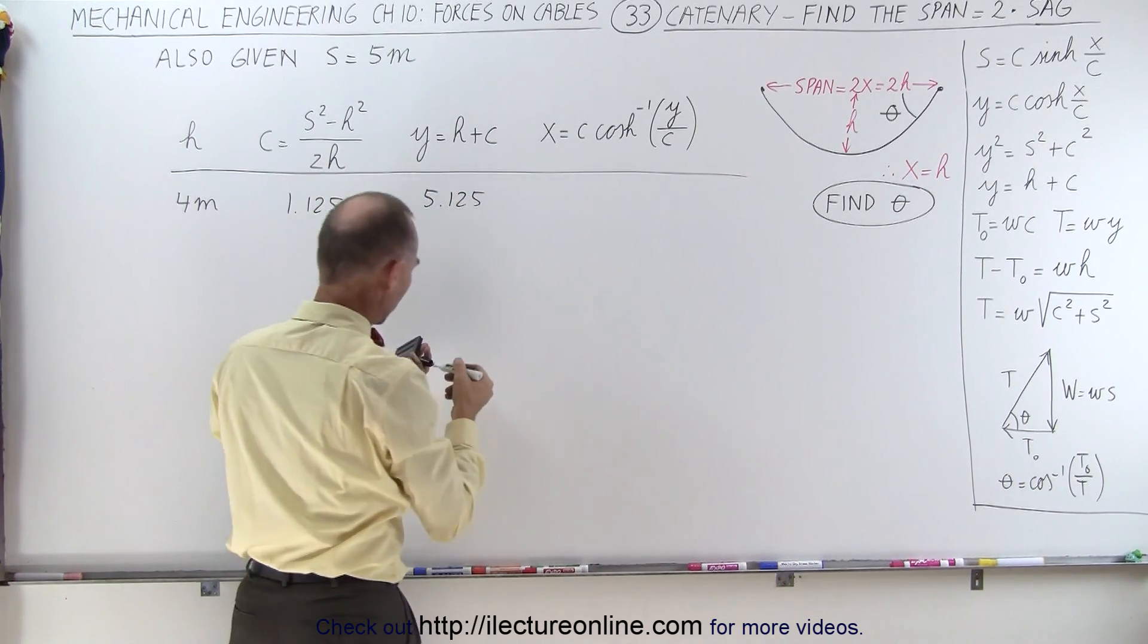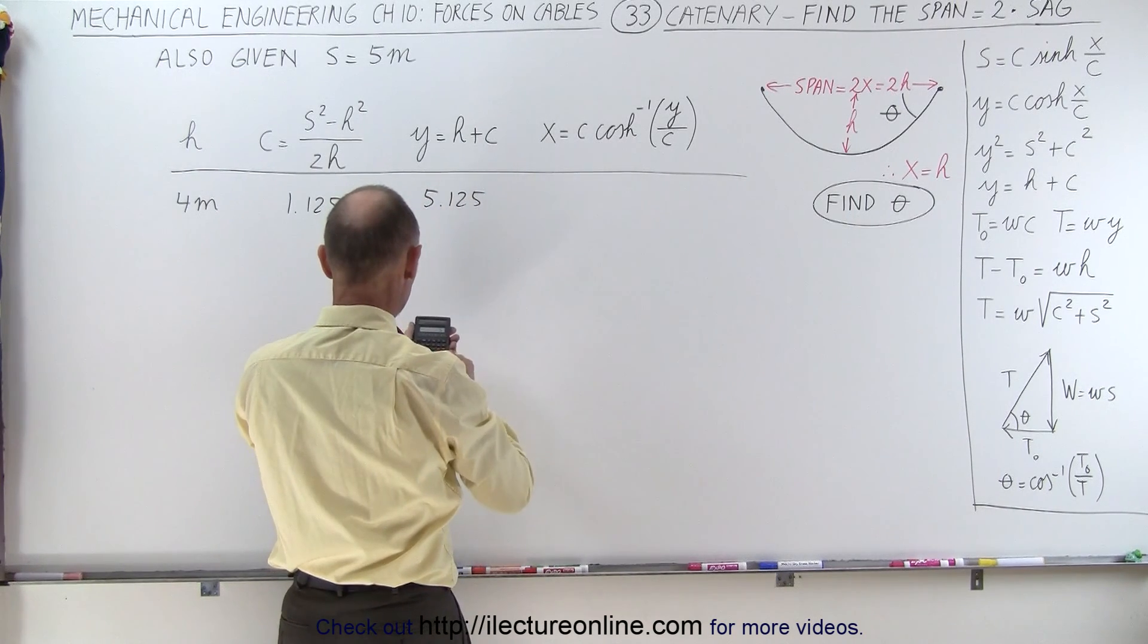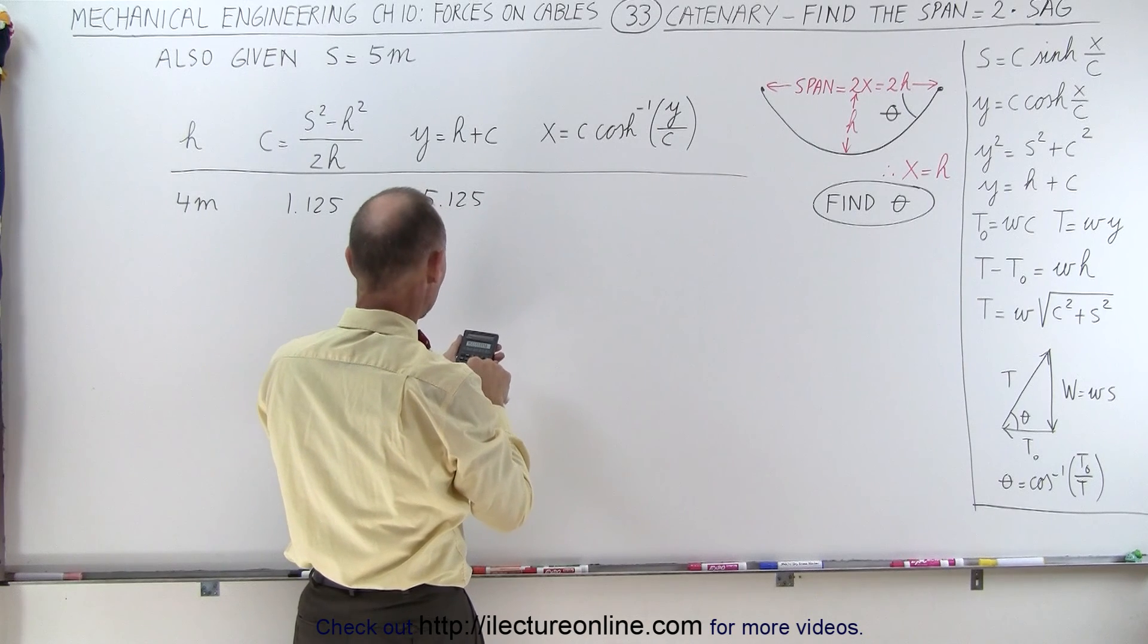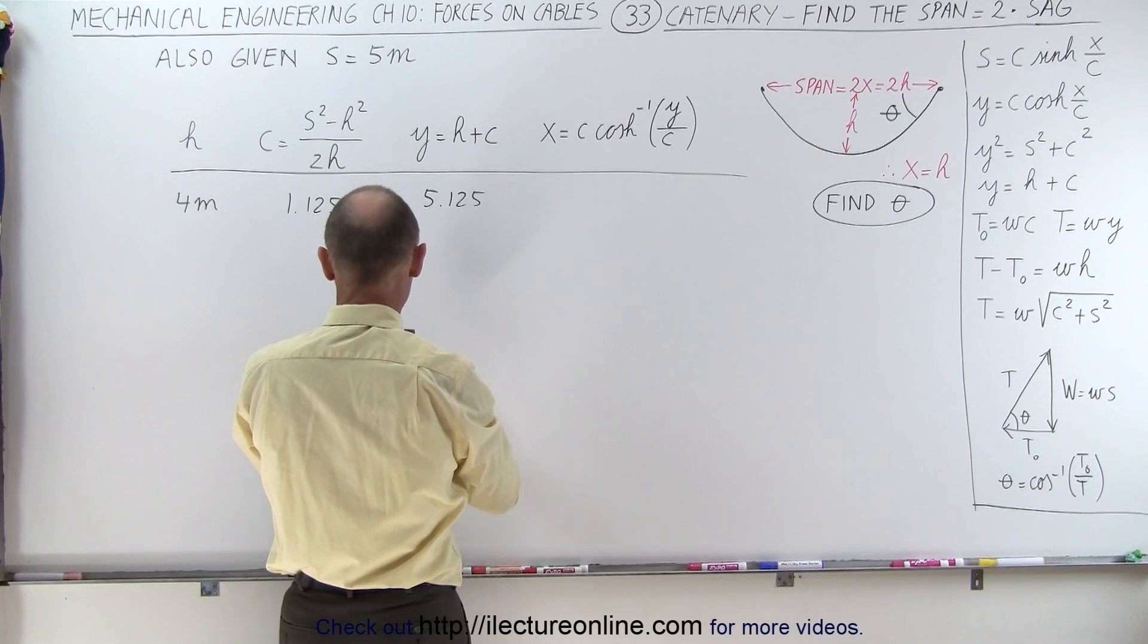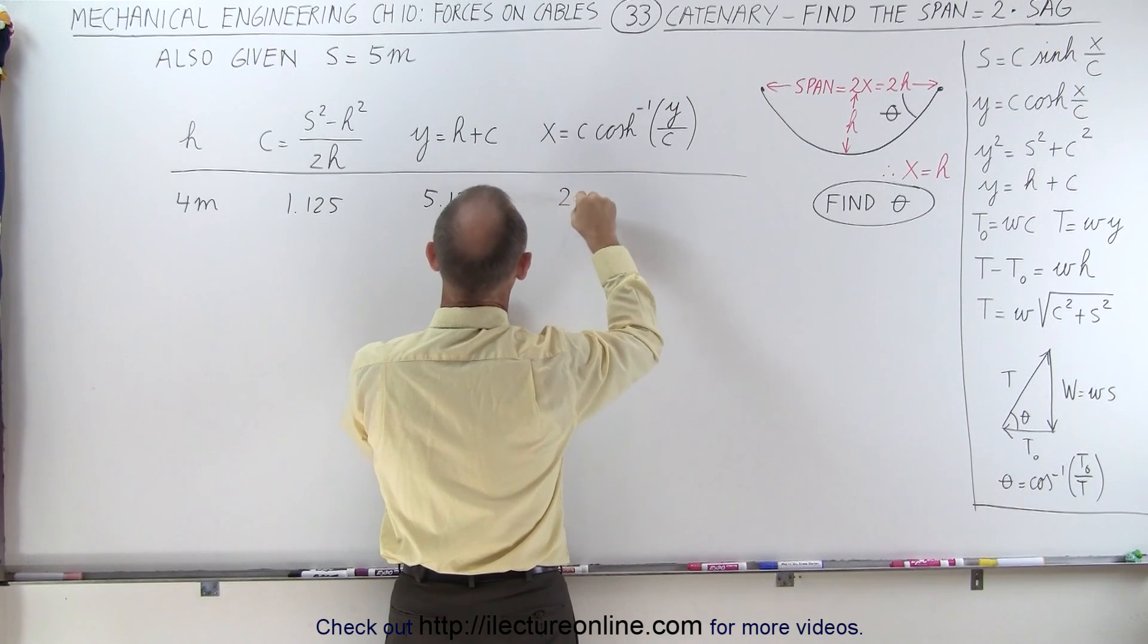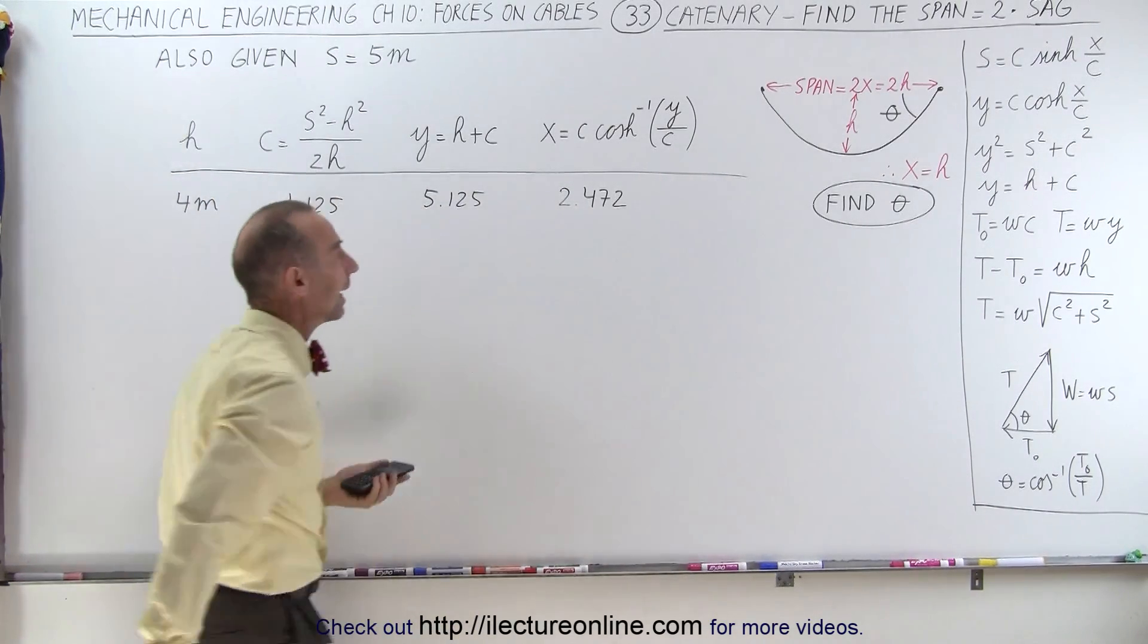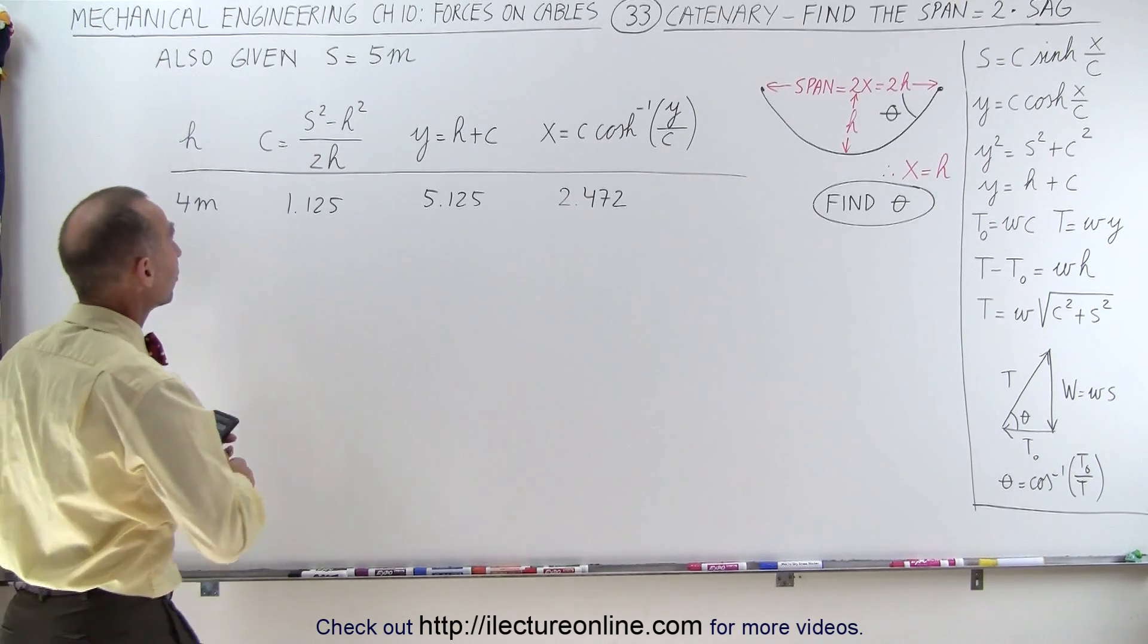And then x will be equal to, we have y divided by c, that's 5.125 divided by 1.125, take the inverse hyperbolic cosine, times c, times 1.125 equals, that's quite a calculation, we get 2.472. We started with h equals 4, it's definitely not equal to x equals 2.472, so let's try a smaller value for h and see what we get.